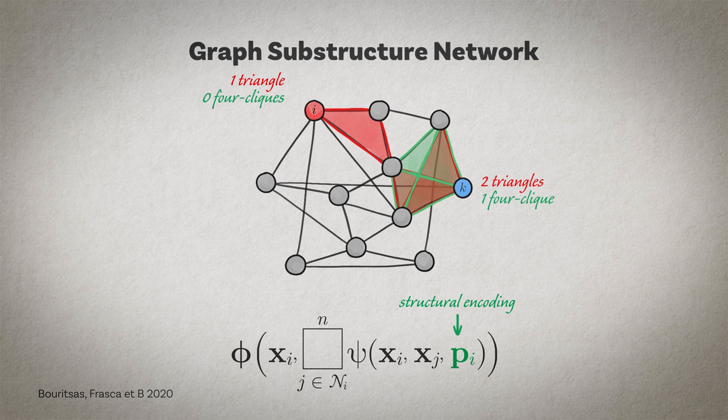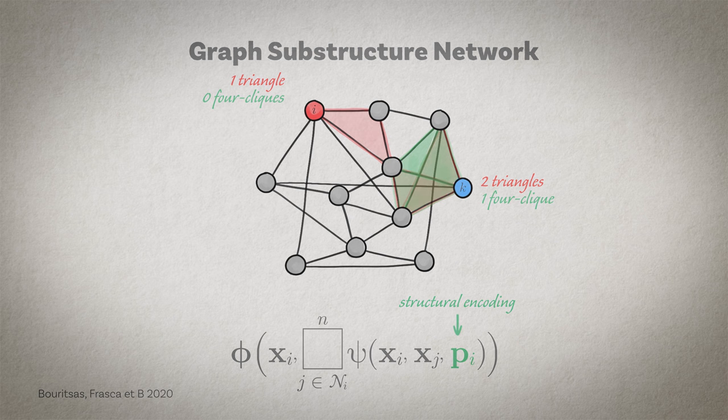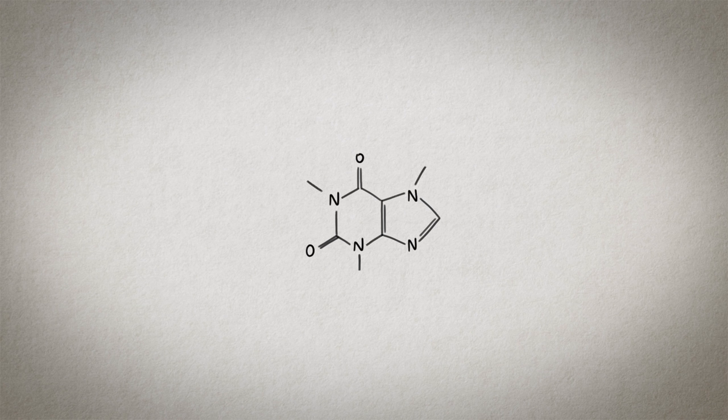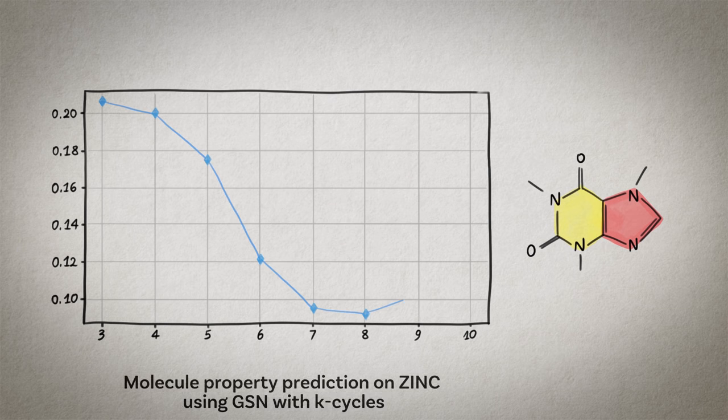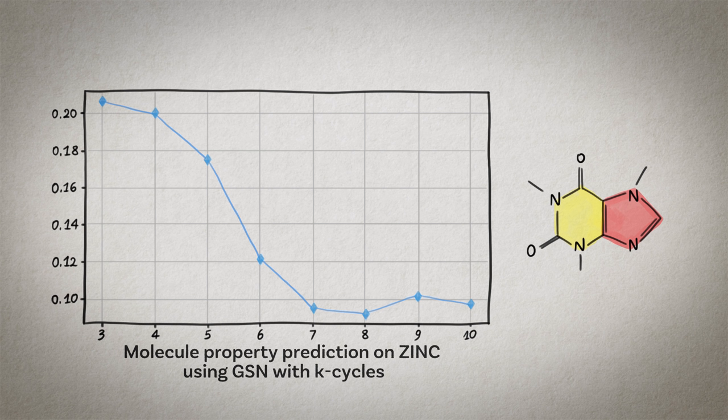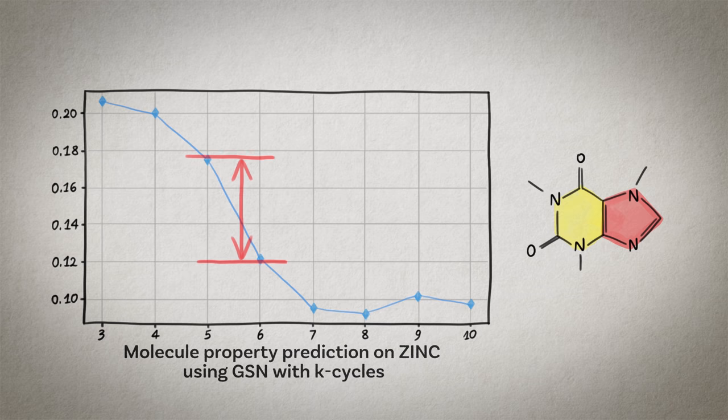For example in molecular graphs cycles are prominent structures. In organic chemistry we have an abundance of what is called aromatic rings and here again you can see the caffeine molecule that has a 6 and a 5 cycle. What we observe in experiments with this architecture is that our ability to predict chemical properties of molecules improves dramatically if we count rings of size 5 or more.